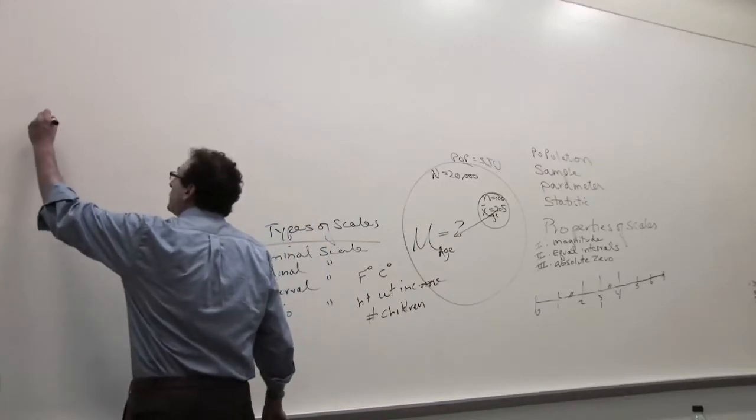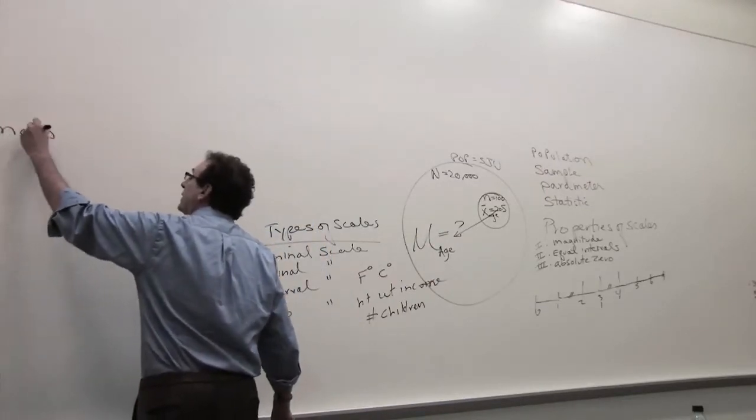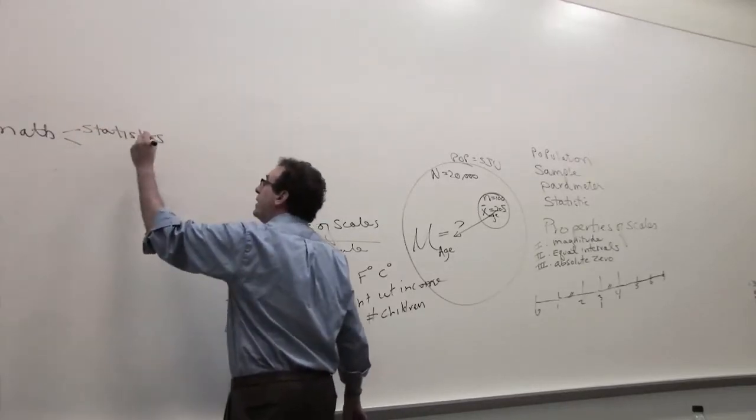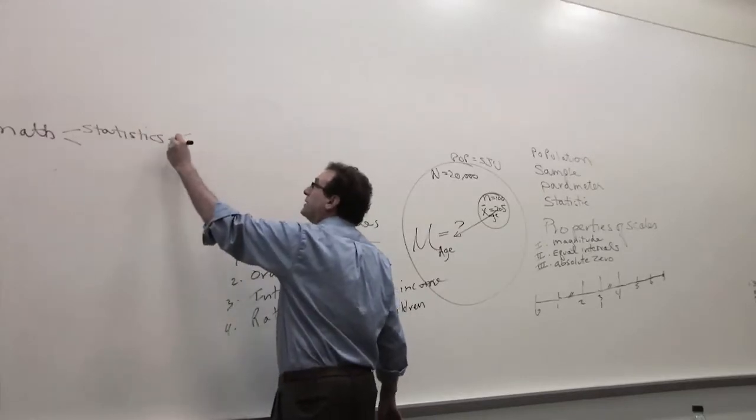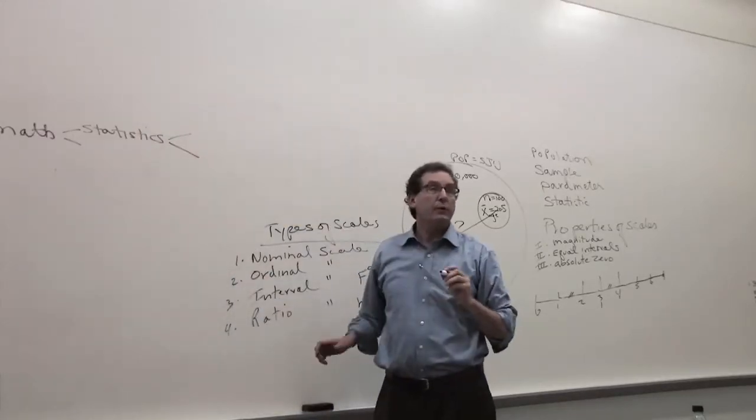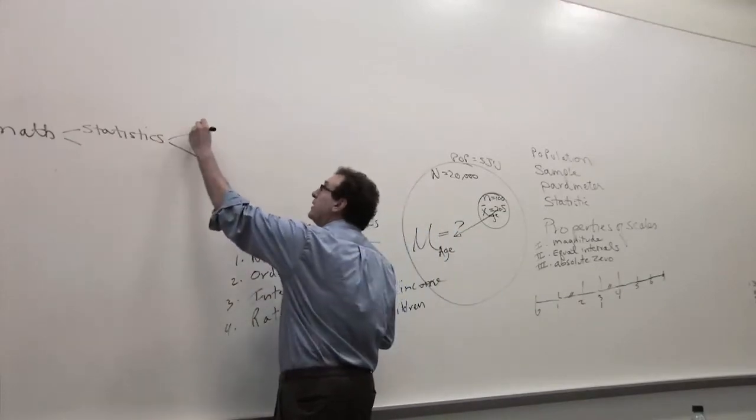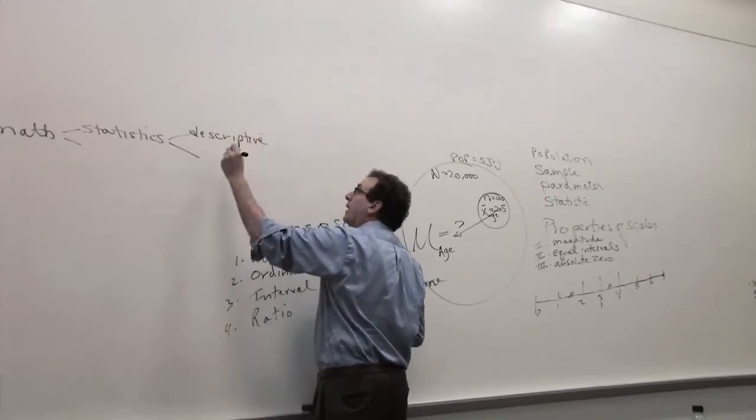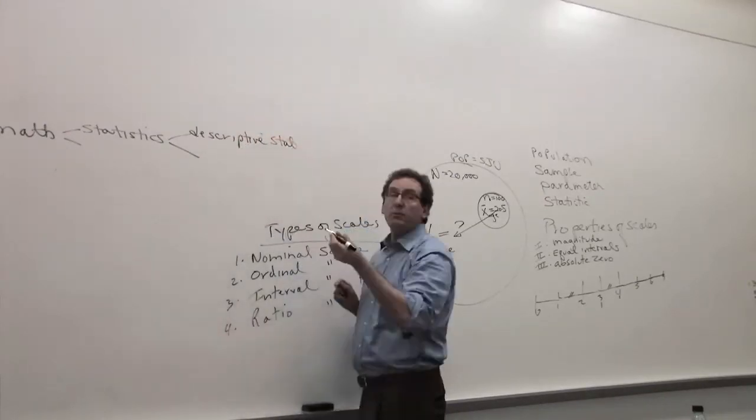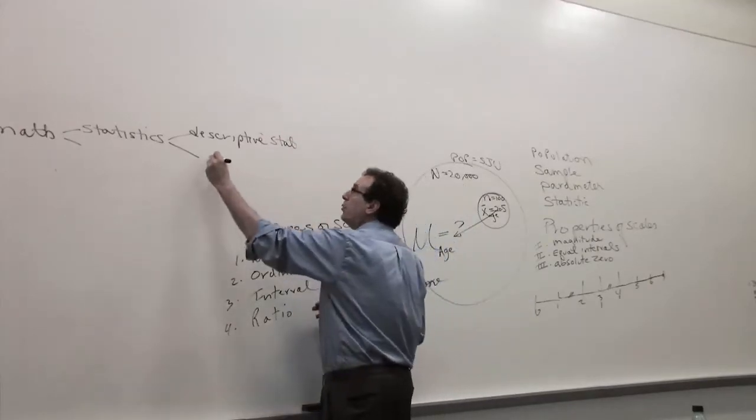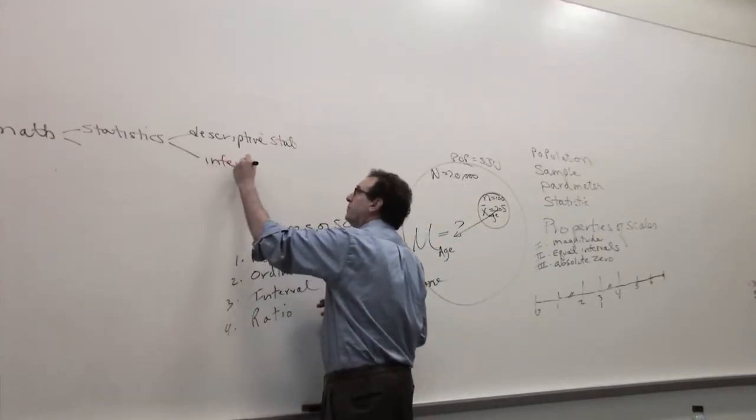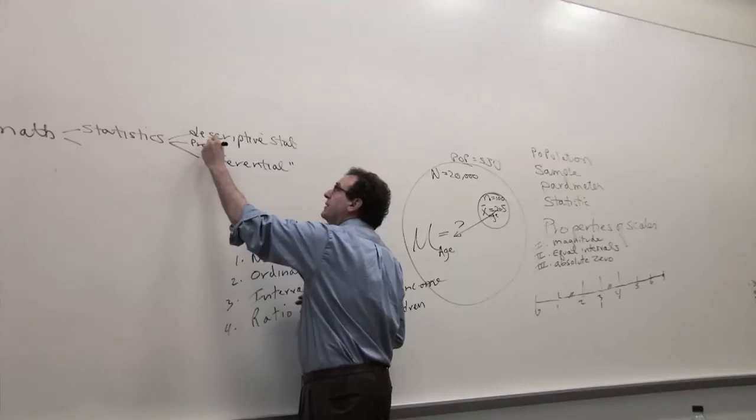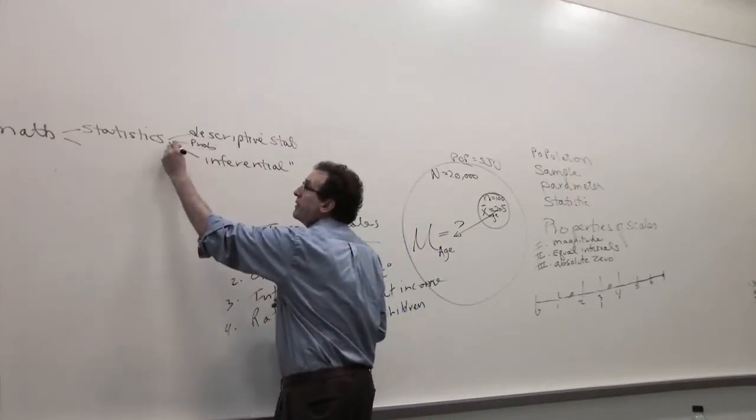So we have statistics. We have math producing many subcategories including statistics. And we have statistics being broken up into two major categories that we're going to discuss this term, plus a third category which I mentioned. The first one is called descriptive statistics. And the second part of the term, which is really chapters nine to ten and subsequent chapters, is called inferential statistics. And in the middle we'll talk about probability, but probability technically is not really a branch of statistics, it's really a branch of mathematics.